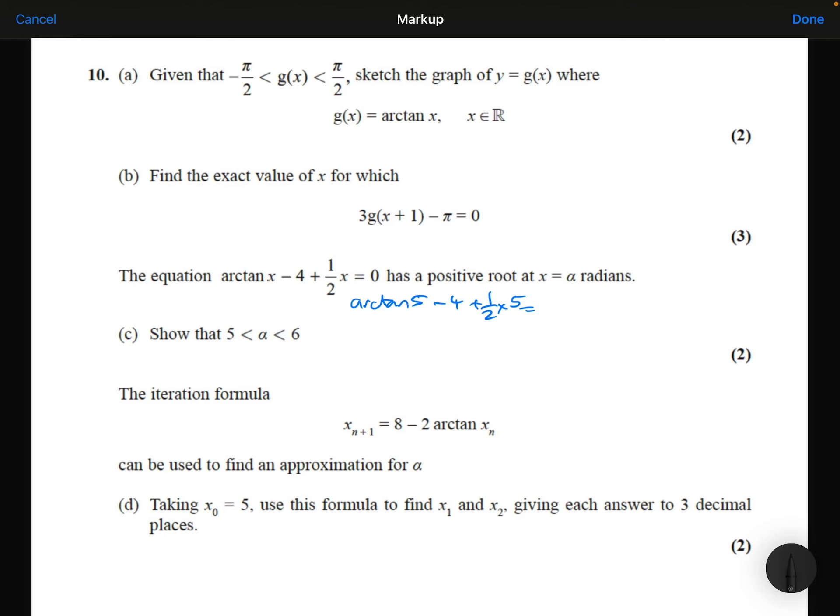So arctan 5 minus 4 plus 5 over 2. I get minus 0.126. So it's negative.